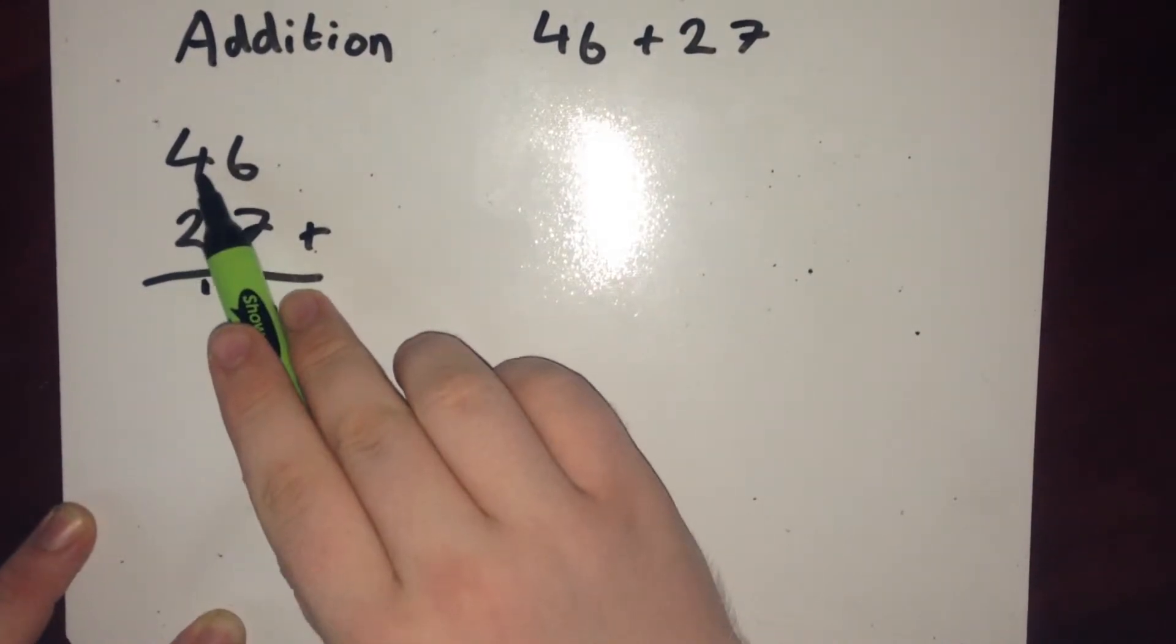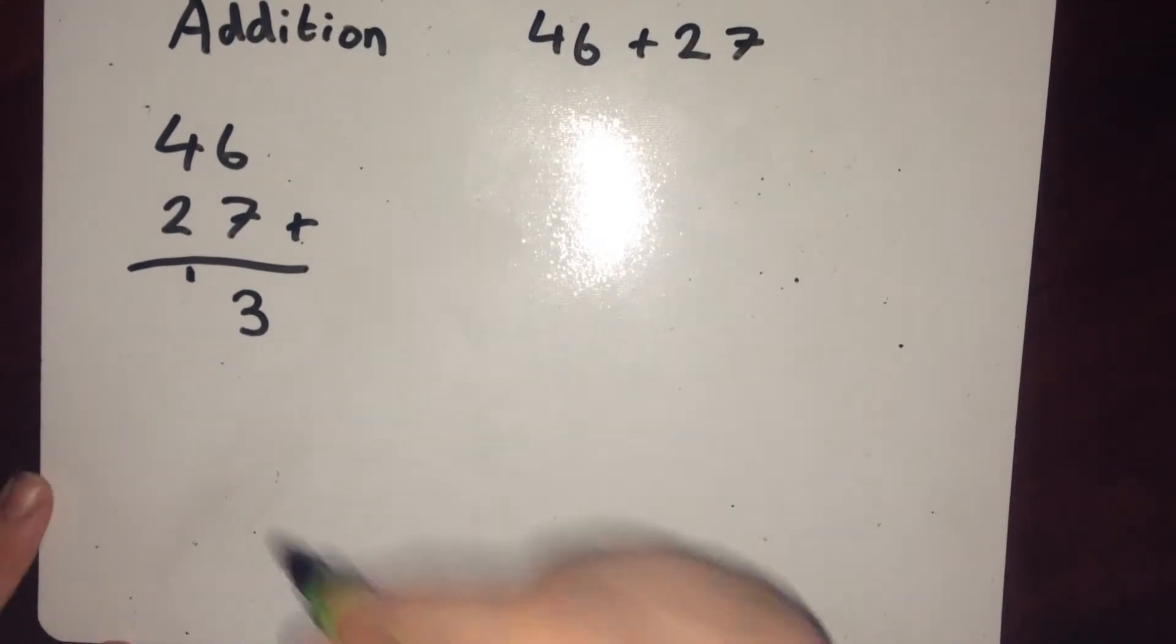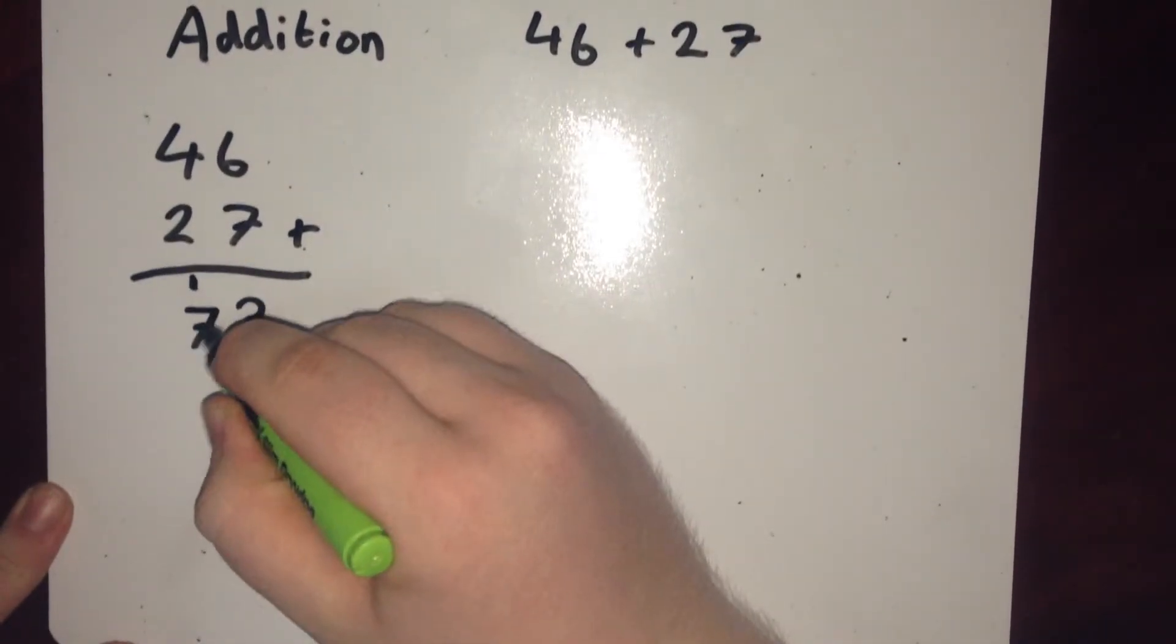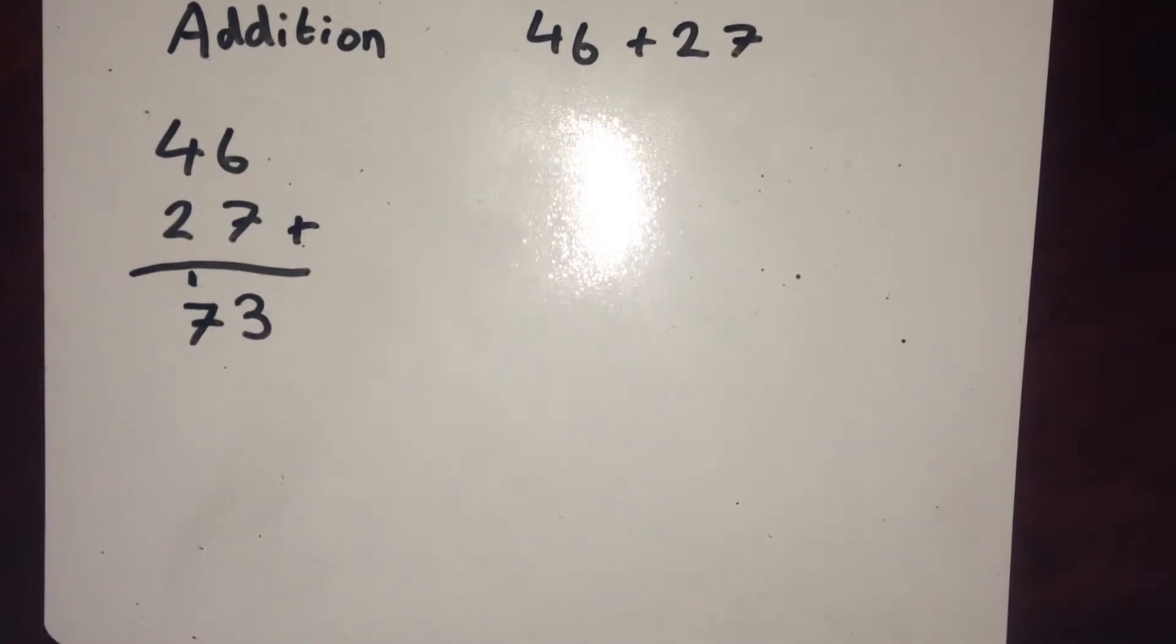So then we add up the tens. So that's 4, 2 and 1, which is 7. So I write the 7 down. So 46 plus 27 is 73.